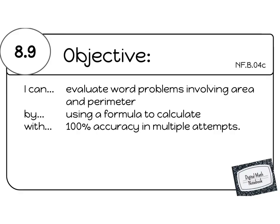Today's objective is I can evaluate word problems involving area and perimeter by using a formula to calculate with 100% accuracy in multiple attempts. Please pause to write the I can and buy statement in your digital math notebook now.